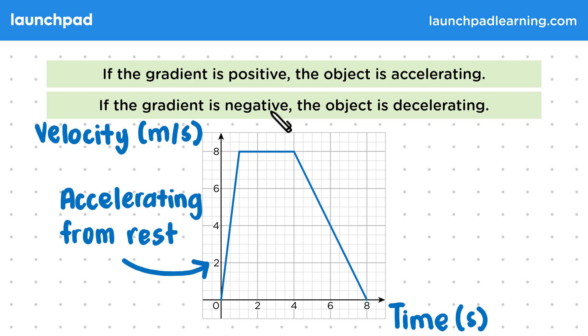A negative gradient is where the y values decrease from left to right, like the last section of the graph. Here the velocity is decreasing back to zero, meaning the bird was decelerating to rest. For your exam, you need to be able to explain what a velocity-time graph tells us both qualitatively and mathematically.